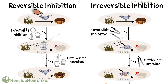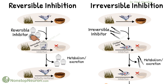Here we have an enzyme, this is its substrate, and this is the product. Now let's say we are giving a reversible inhibitor to the patient. The reversible inhibitor binds to the enzyme — this binding prevents the activity of the enzyme.